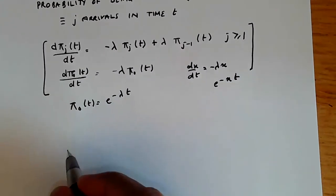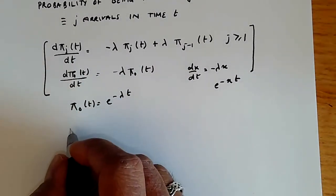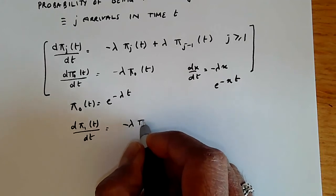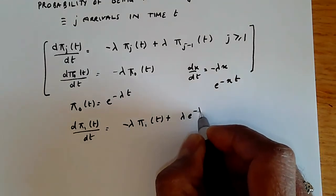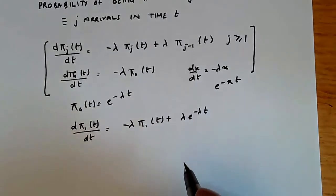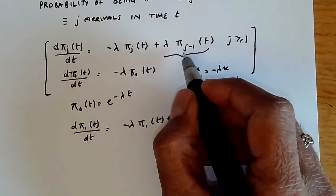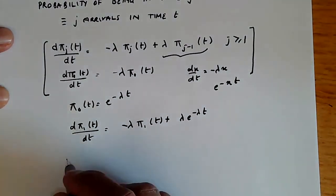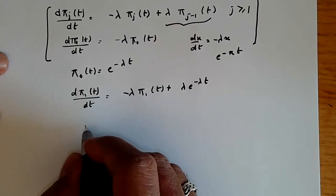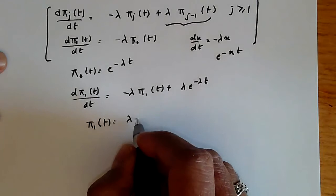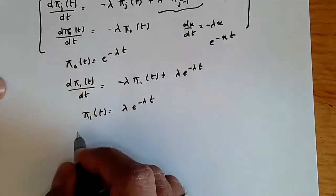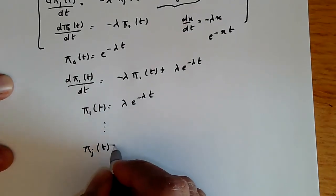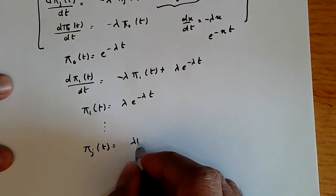Substituting π_0(t) into the equation for j=1 gives dπ_1(t)/dt = −λ π_1(t) + λ e^{−λt}, since π_{j−1}(t) = e^{−λt}. Solving this differential equation gives π_1(t) = λt e^{−λt}. We can then substitute this back into the general equation and eventually obtain π_j(t), the probability of being in state j at time t.